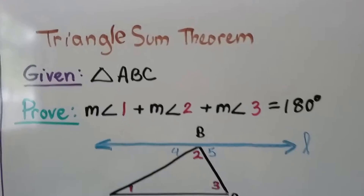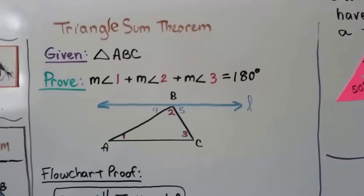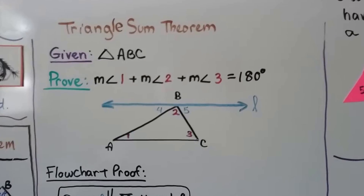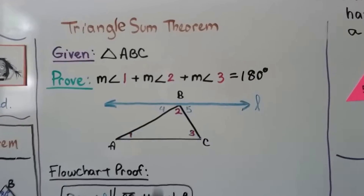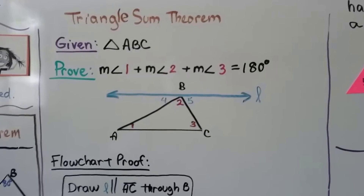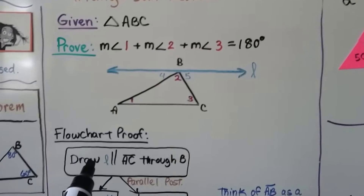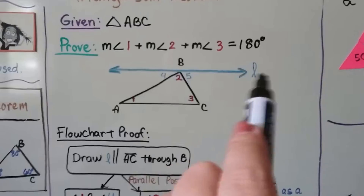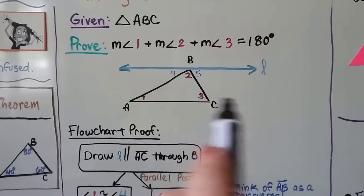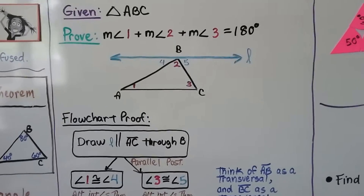For the Triangle Sum Theorem proof, we're given triangle ABC, and we need to prove that the measure of angle 1 plus the measure of angle 2 plus the measure of angle 3 equals 180 degrees. I'm going to make a flowchart proof. The first thing we do is draw line L, our auxiliary line, parallel to AC through B — that's the Parallel Postulate.